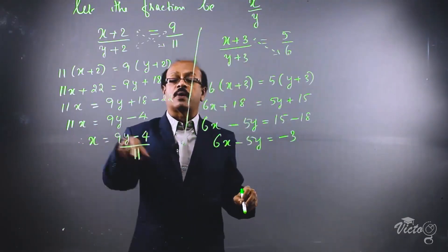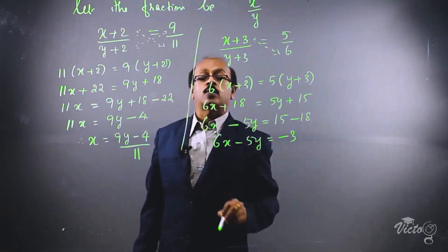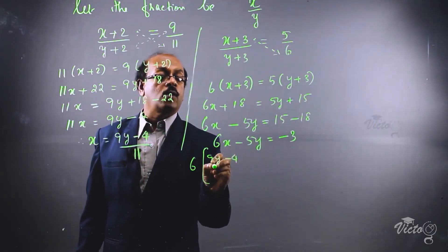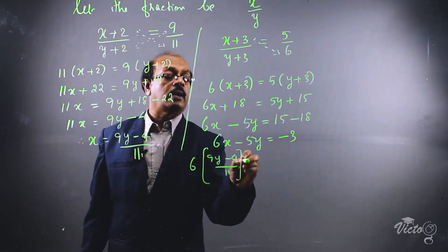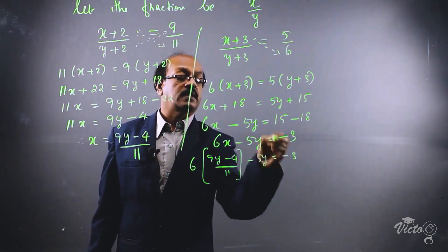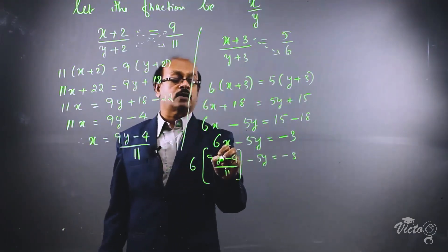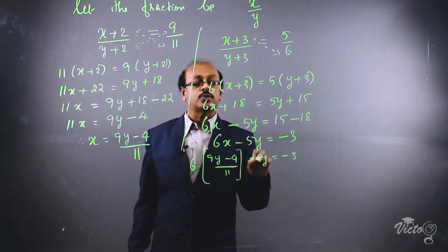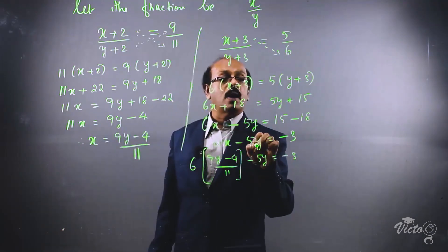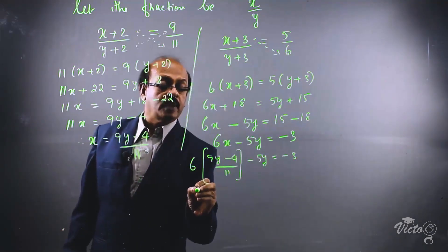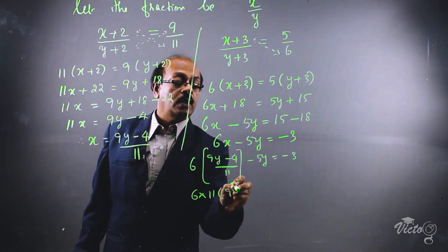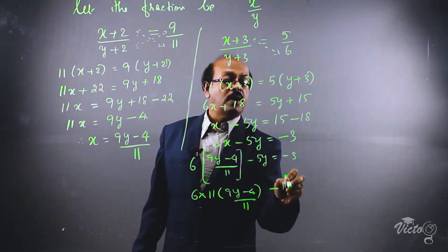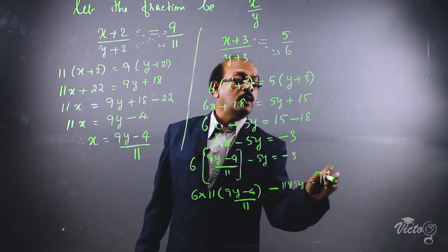Now we substitute the value of x into this equation. Instead of x, we write (9y − 4) divided by 11. So we have 6 × (9y − 4)/11 − 5y = −3. To remove the denominator, we multiply the entire equation throughout by 11.